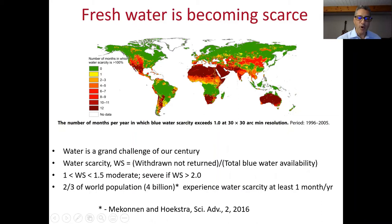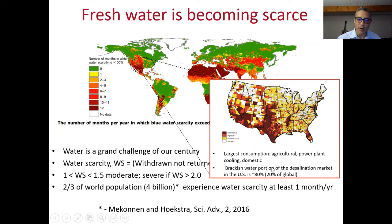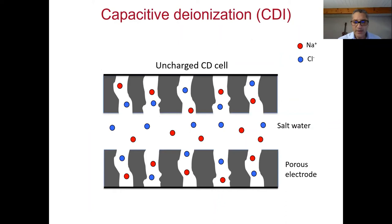By way of introduction, I'll show this heat map from Mekonnen and Hoekstra's 2016 paper, which shows water scarcity throughout the world. They found that something like two-thirds of the world's population experiences significant severe water scarcity for at least one month out of the year. Within this global context, we should consider the US market, where 80% of the desalination market is in brackish water. This is important for CDI, because CDI is most applicable to brackish water.